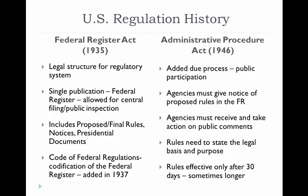In 1946, the Administrative Procedure Act was signed into law, and this ensured fairness and public participation. It ensured that the rules published in the Federal Register were in proposed form — meaning they weren't finalized. First there was a time to comment on them and a time to discuss the rules before they were finalized. It was also important during this time that the legal basis for the rule be included in the published version in the Federal Register.